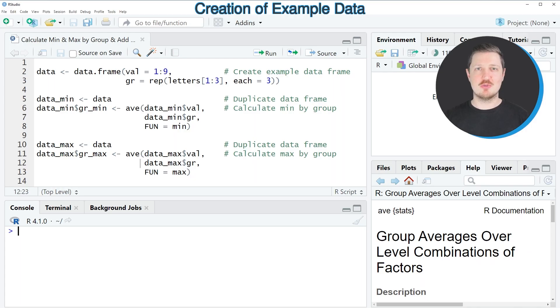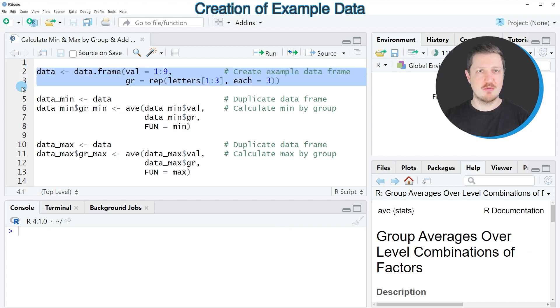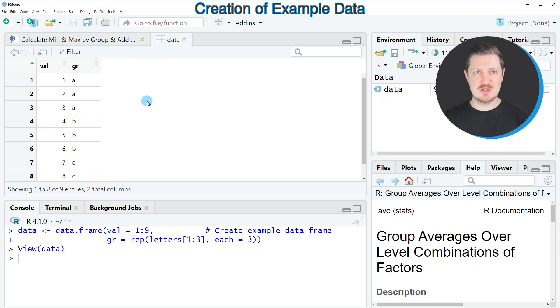In this video I will show you an example and for this example we first need to create an example data frame as you can see in lines 2 and 3 of the code. So after running these lines of code a new data set called data is appearing at the top right and if you click on this data frame a new window is opened which is showing the structure of our data frame.